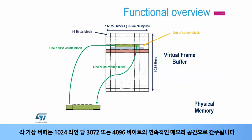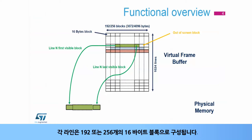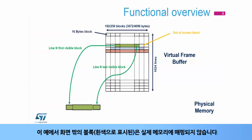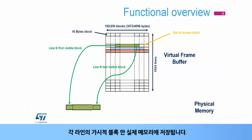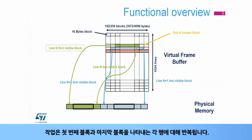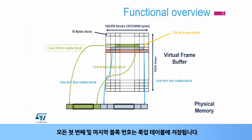Each virtual buffer is seen as a continuous memory space of 3,072 or 4,096 bytes per 1,024 lines. Each line is composed of 192 or 256 sixteen-byte blocks. In this example, out-of-screen blocks, shown here in white, won't be mapped into the physical memory. For each line, the first visible block and the last visible block are stored in the lookup table. Only the visible blocks of each line will be stored in the physical memory. The operation is repeated for each line, indicating the first block and the last block. All the first and last block numbers are stored in a lookup table.